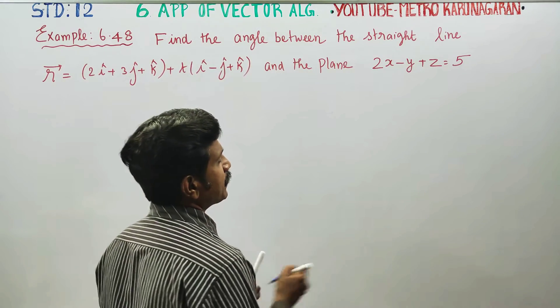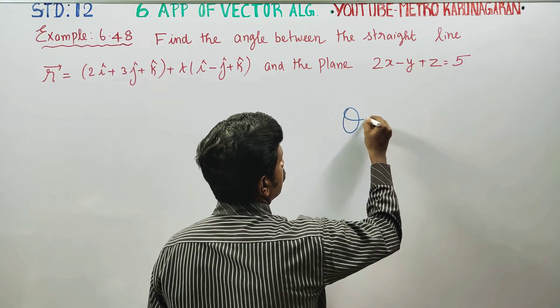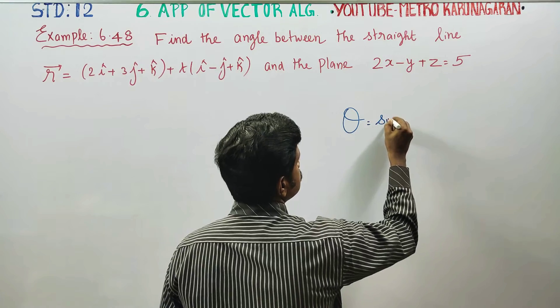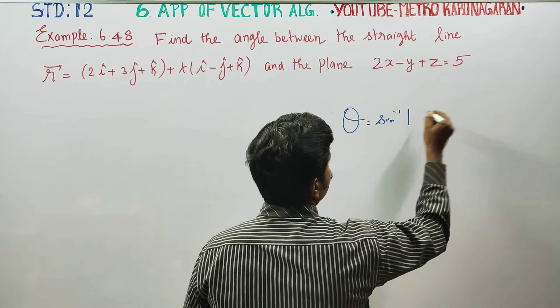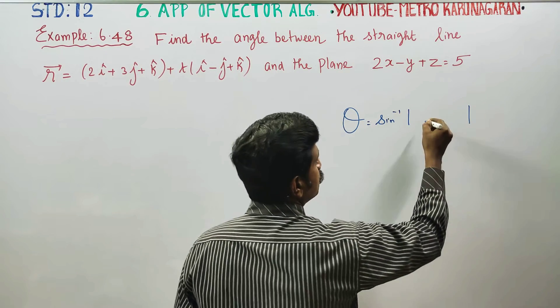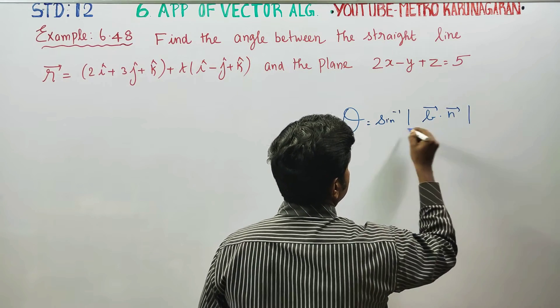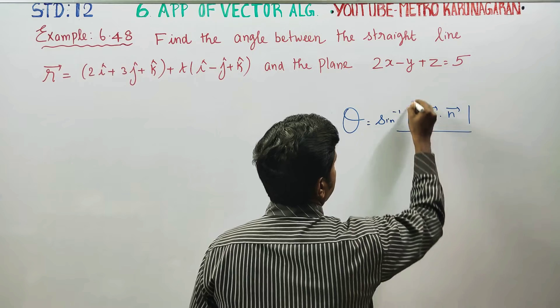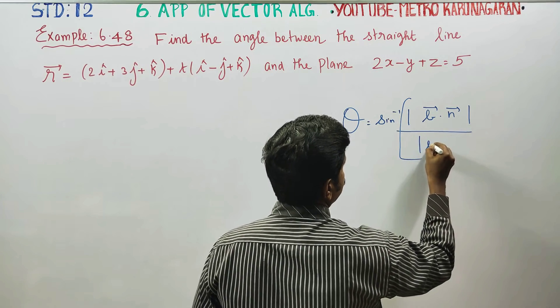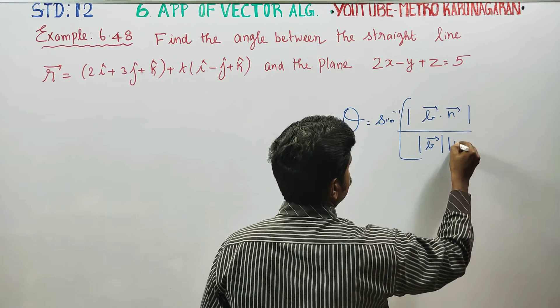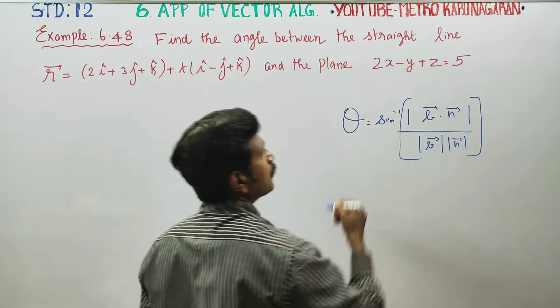Angle between the straight line and the plane - the formula is like this: sine inverse of modulus of b vector dot n vector divided by magnitude of b vector magnitude of n vector. This is the formula.